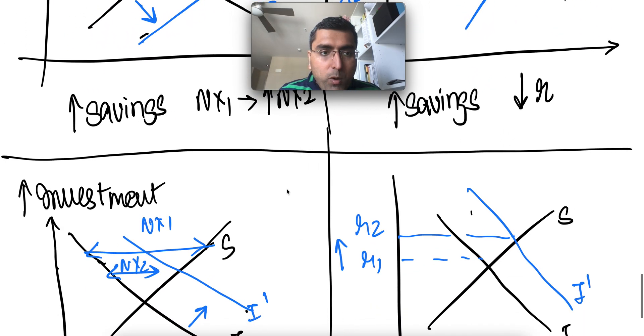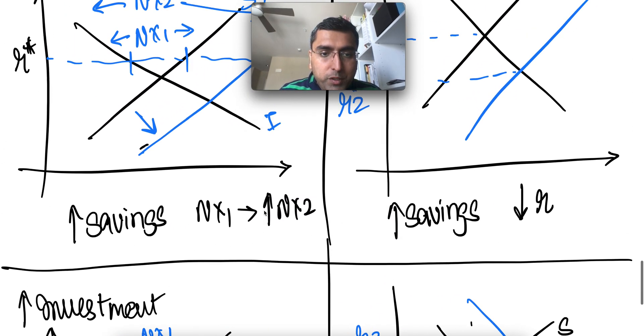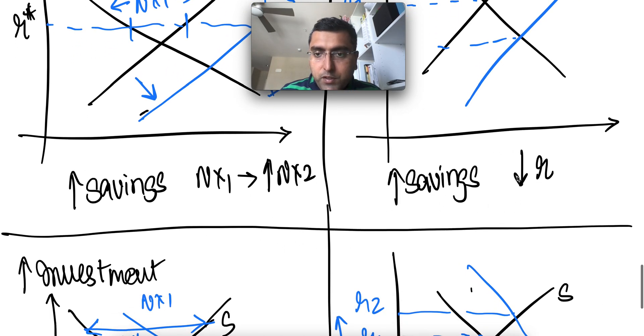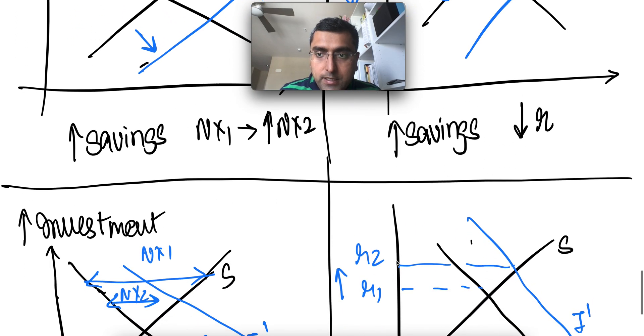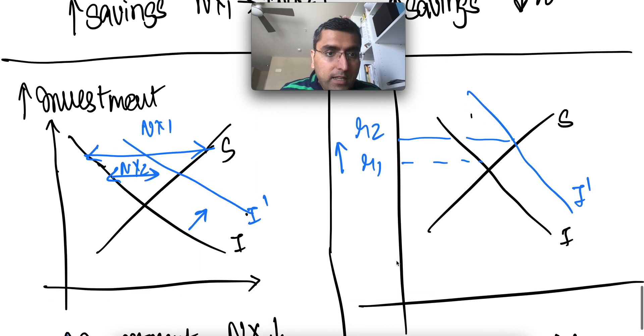But in the same way, so savings, when it goes up, net export increases in small economies. We saw this earlier, savings go up, real interest rate decreases.